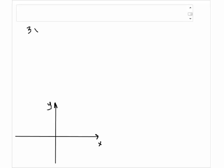Find the slope of the line and graph it. 3x plus 2y equals 8.